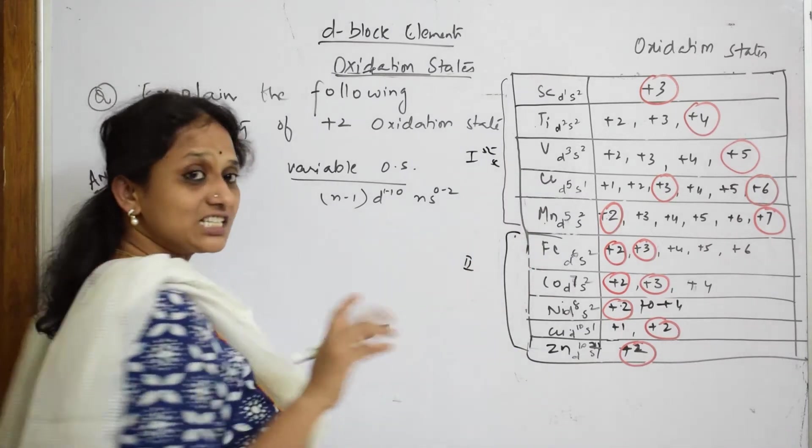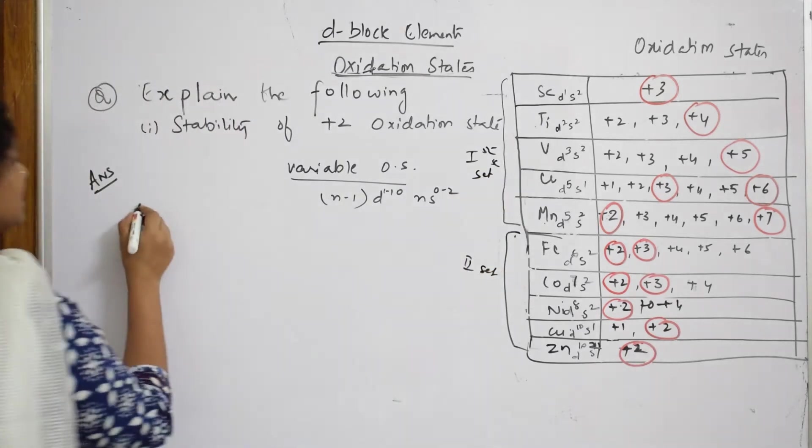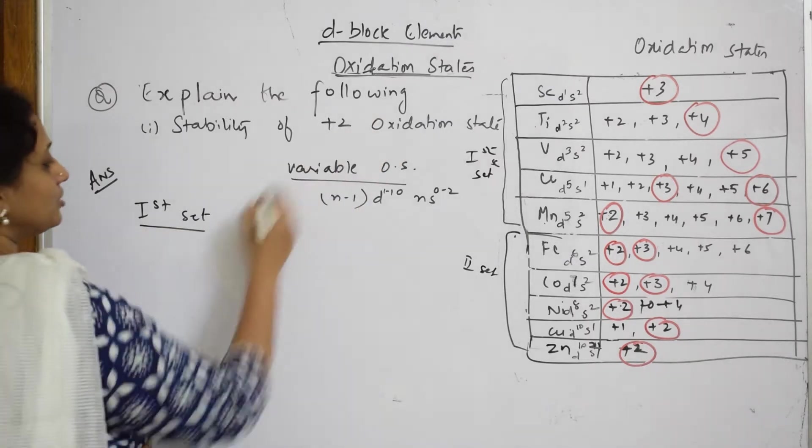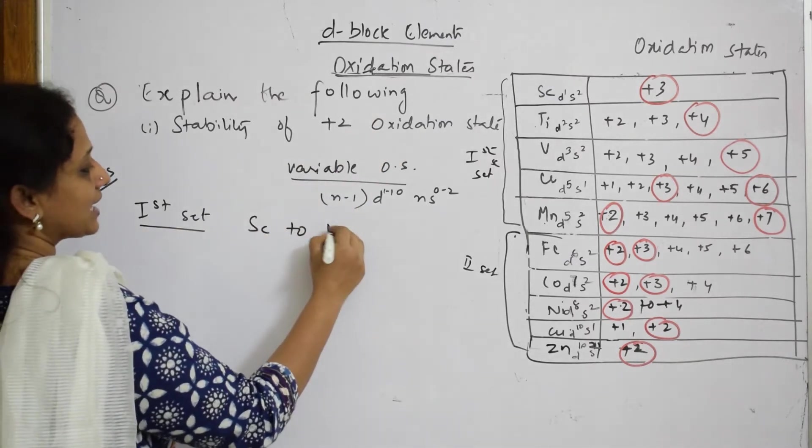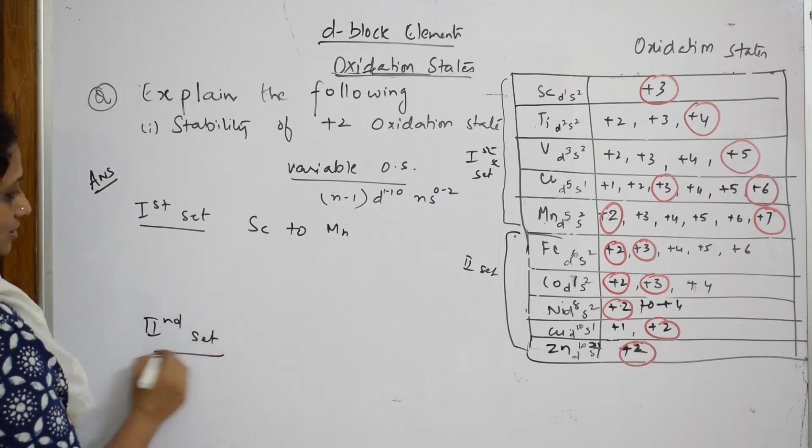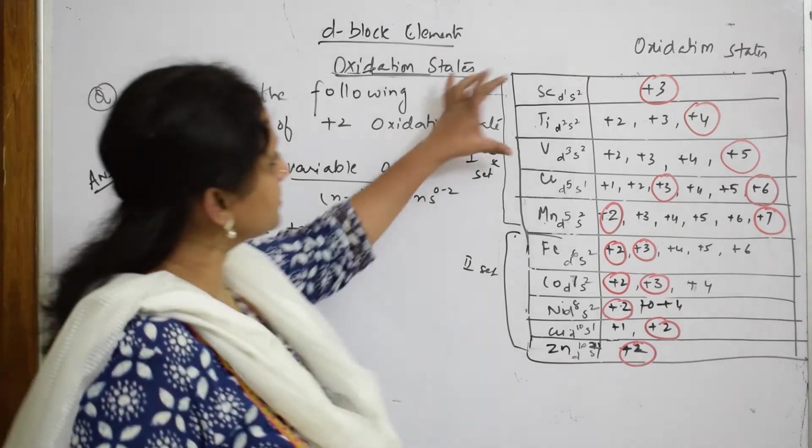Let me take the first series here and let me go with the second set, first set and second set. So when I have to speak in terms of first set, that is from your scandium to your manganese, and second set from iron to zinc.